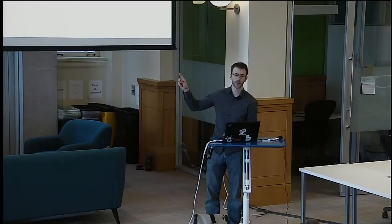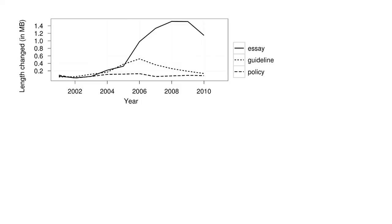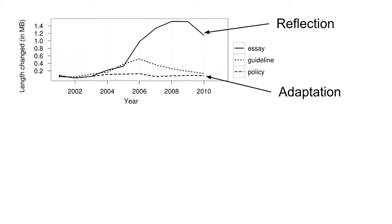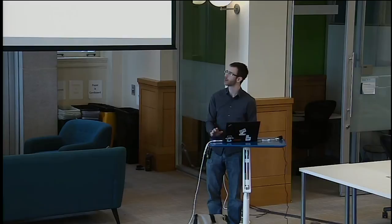Coming back to the graph of formalized norms — policies and guidelines — and informal norms — essays. I like to think about formalizing something into a law as adaptation: we identified something valuable and we're going to codify it so we can enforce it across the wiki. But essays involve a lot of reflection. A lot of essays ask, where are we going? How do we want to get there? Is this really who we want to be? The whole set of essays contains a lot of reflection, a lot of trolling and humor. I think this is something concerning about the adaptive characteristics of Wikipedia.